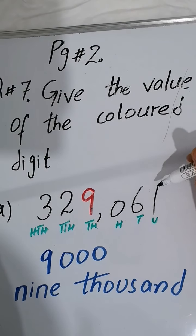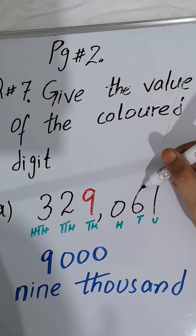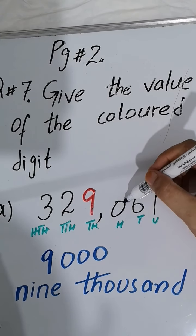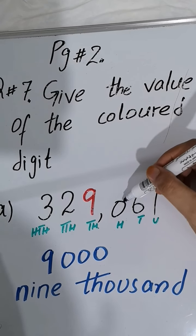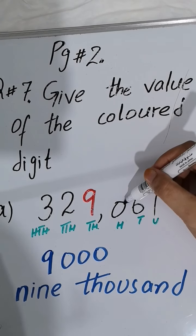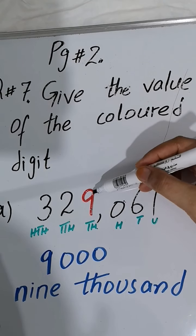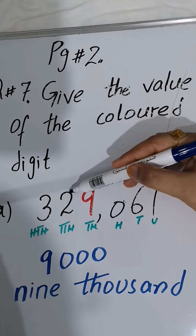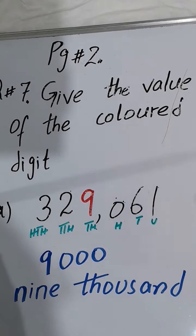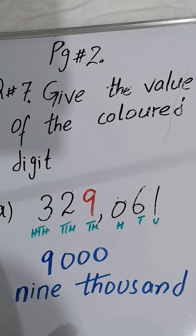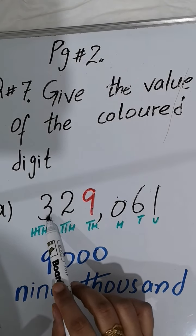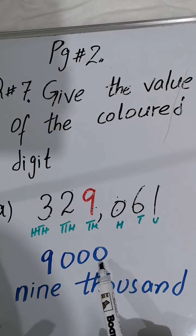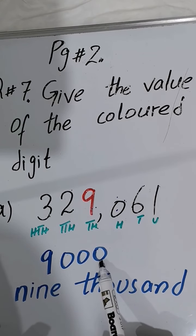If you want to write in words, we will write 9000. Value of 1 is one (units), value of 6 is 60 (tens), value of 0 is zero (hundreds). Nine is in the thousands place, and 2 is in ten thousands. For 3 at hundred thousands, five zeros will come after it. But they ask us only the value of 9, so we will write 9000.